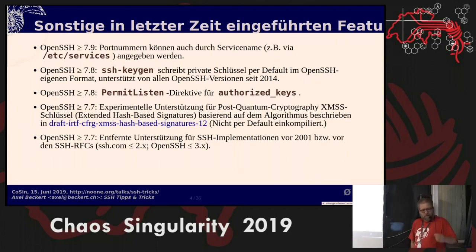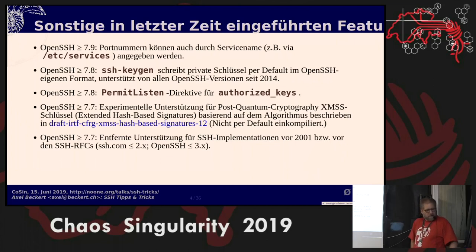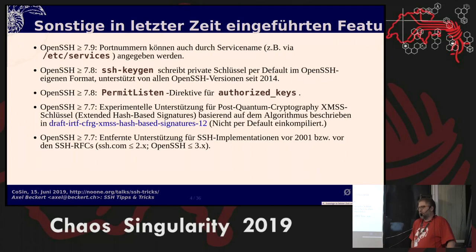The format in which private keys are written changed in 7.8. It's backward compatible to versions since 2014. Since 7.7, also included in Debian Buster, you have the first post-quantum cryptography algorithms for encryption in SSH. Also in 7.7, they kicked out support for connecting to ancient SSH implementations published before the SSH RFCs, so about 18 years ago. Unless you have some old hardware firmware offering SSH — like old Sun SPARC firmwares — in that case, my recommendation: use PuTTY, also available on Linux.